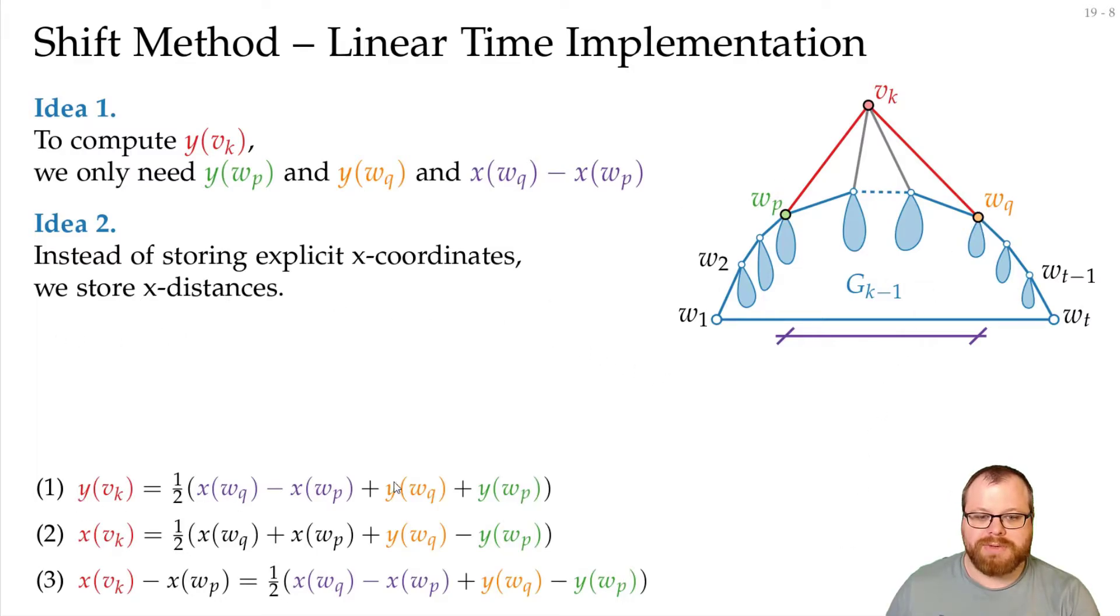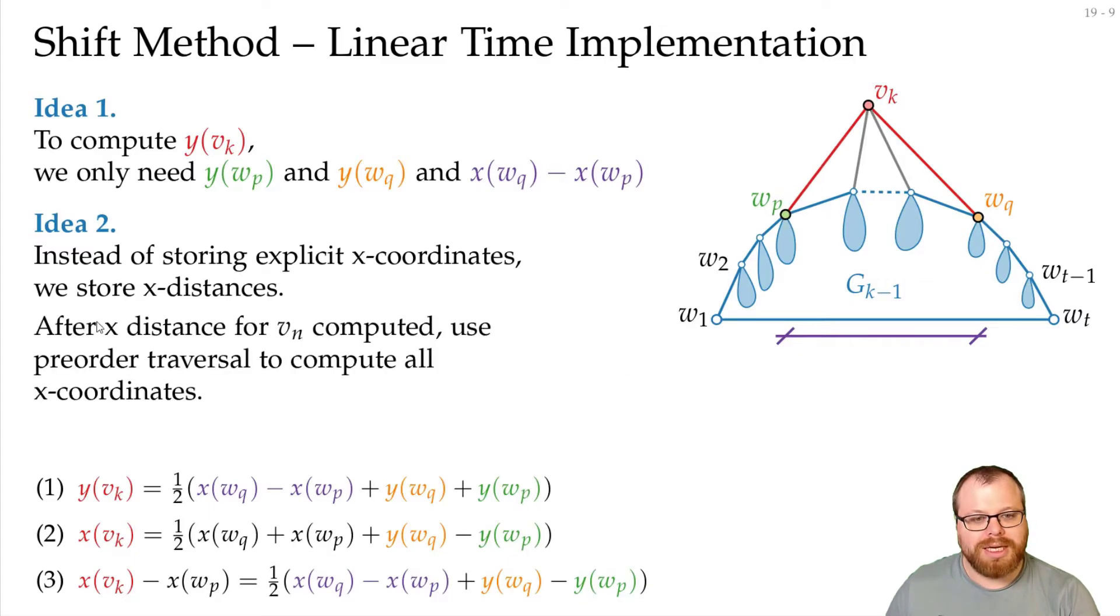And if we know the explicit y coordinates and the distances between vertices, then after we're done with V_n, we can do some pre-order traversal to compute the explicit coordinates.